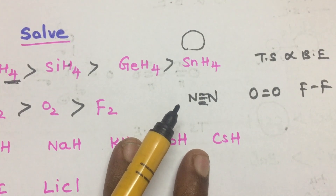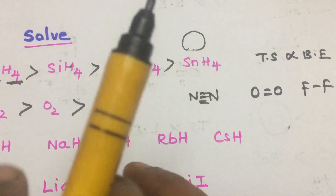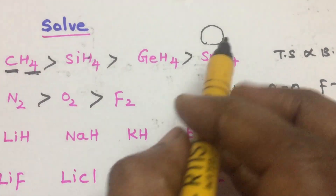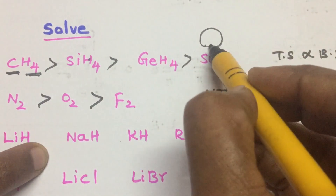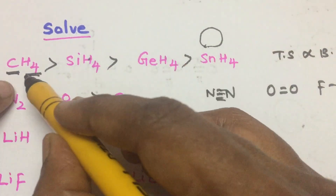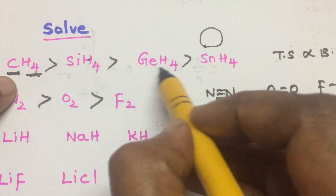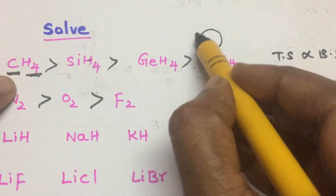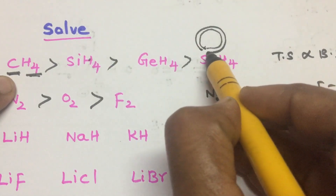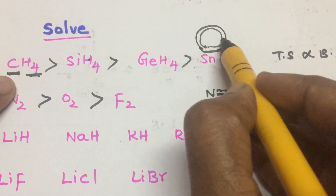Either you have to look at the bond order or the bond length. Since it is the same bond, look at bond length. Silicon is down the group from carbon, so silicon has a bigger atomic size, meaning a longer bond length.